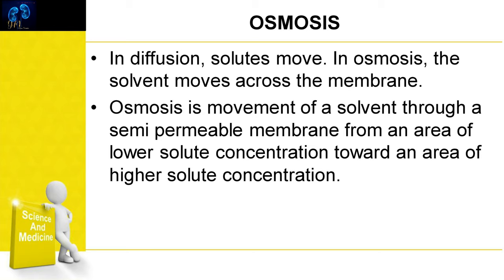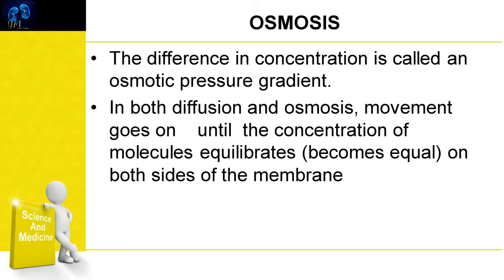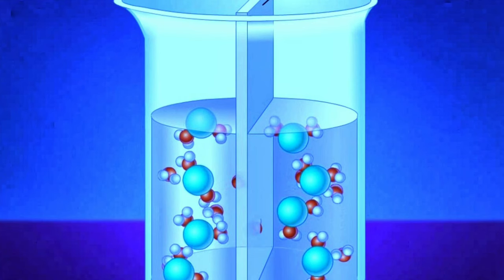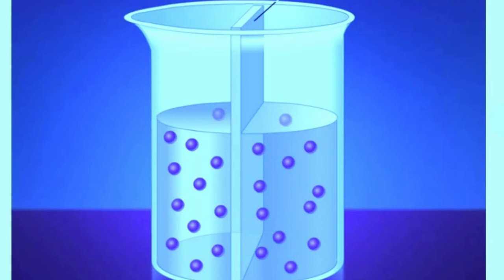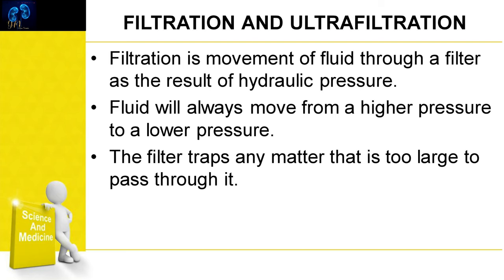Another principle is osmosis. In diffusion, the solute moves; in osmosis, the solvent moves across the membrane. Osmosis is the movement of solvent through a semi-permeable membrane from an area of lower solute concentration toward an area of higher solute concentration. The difference in concentration is called the osmotic pressure gradient. Both diffusion and osmosis occur until equilibrium is reached.